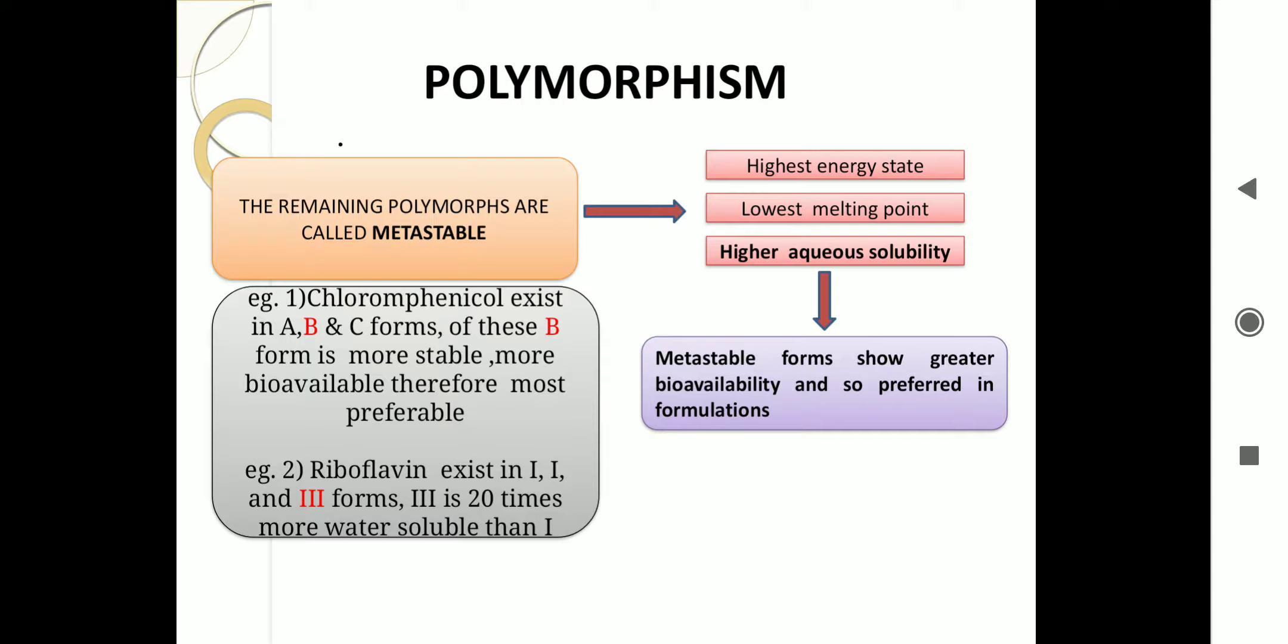And the remaining polymorphs are called metastable. Apart from stable polymorphs, all the rest are called metastable. And what will be their properties? They will have the highest energy state, they will have the lowest melting point, and they will have highest aqueous solubility. You can see these three properties, I have written highest aqueous solubility in bold. Why? Because metastable forms show greater bioavailability, and they are so preferred in formulation. As I told you before, if solubility is high, the drug will quickly go into solution form in the GI tract and will be absorbed quickly. This is why metastable form is more preferred in formulation.